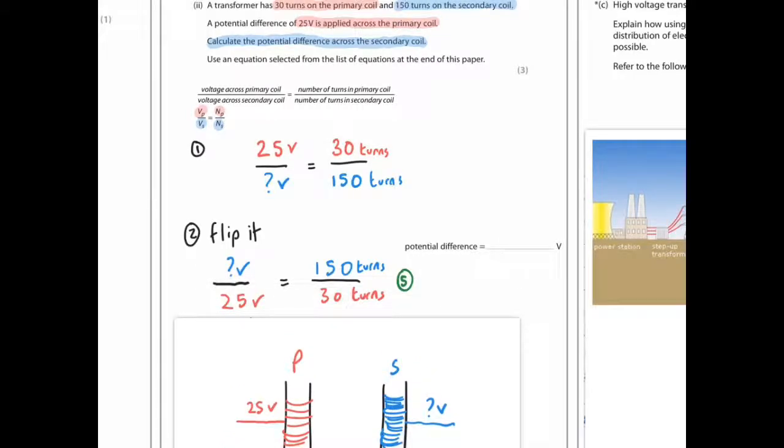You can do that because it's a ratio. As long as you do the same to both sides it's fine. So 150 divided by 30 equals whatever this is divided by 25. So what we do is we work out the one we can first. 150 divided by 30 is 5.